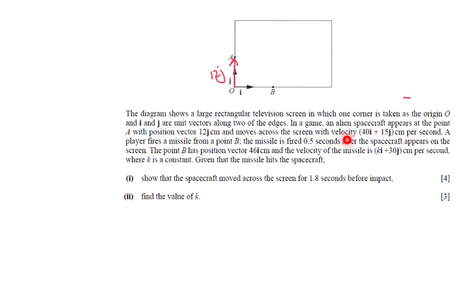And moves across the screen with a particular velocity, 40I plus 15J. I'm going to also put that in the diagram, so 40I, that's the horizontal, and 15J, so roughly like that. That's how he is moving, 15J and 40I, per second.